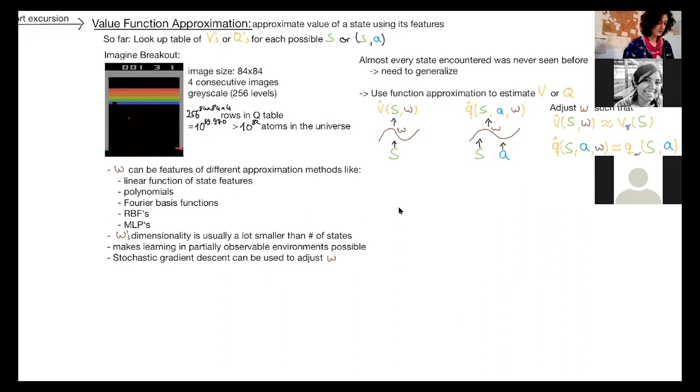And these weights or parameters W can be features of different approximation methods. For example, they can be just linear features of the state features. The linear function of the state features can be a polynomial function, can be Fourier basis functions, radial basis functions, or currently most prominent multi-layer perceptrons for deep reinforcement learning, often also convolutional neural networks.